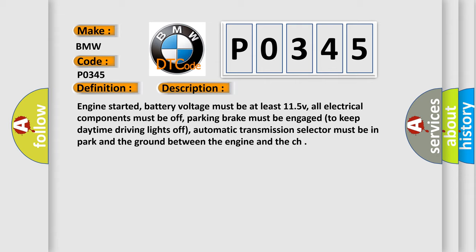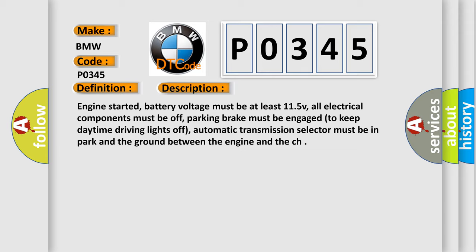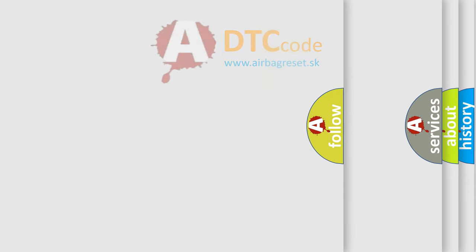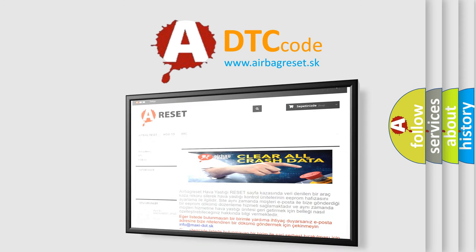Conditions: engine started, battery voltage must be at least 11.5V, all electrical components must be off, parking brake must be engaged to keep daytime driving lights off, and the automatic transmission selector must be in park. This diagnostic error occurs most often in these cases: CMP sensor circuit is open or shorted to ground, CMP sensor circuit is shorted to power, CMP sensor ground return circuit is open, CMP sensor installation incorrect, or Hall effect type CMP sensor is damaged, or CMP sensor shielding is damaged.